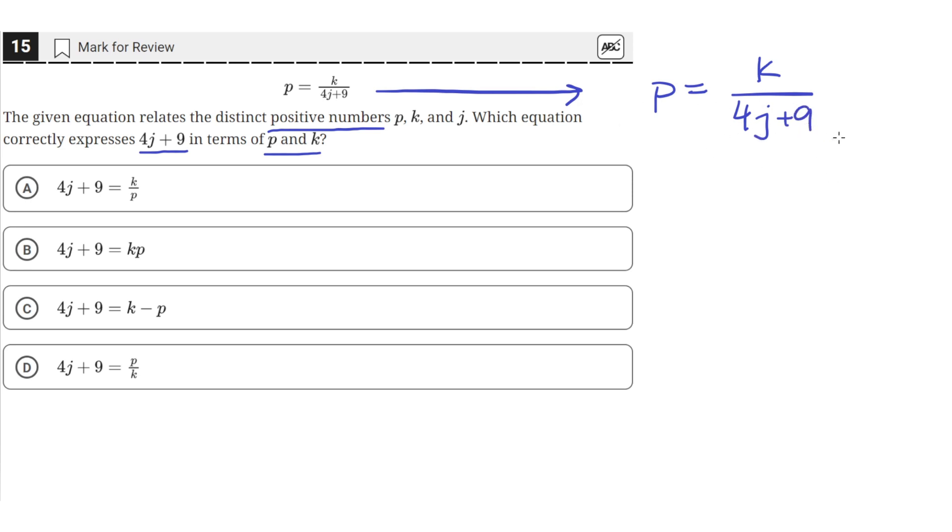We want to isolate for this quantity 4j plus 9, so we have to get it on one side of the equation all by itself. We can do that by multiplying both sides by 4j plus 9 to move it from here to there.